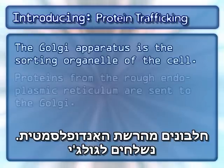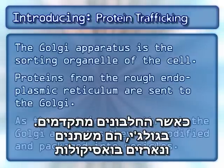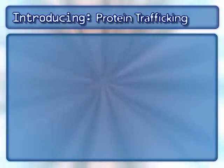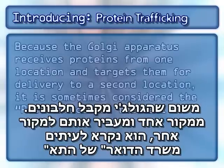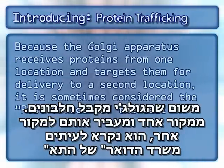Proteins from the rough endoplasmic reticulum are sent to the Golgi. As the proteins move through the Golgi apparatus, they are modified and packaged into vesicles. Because the Golgi apparatus receives proteins from one location and targets them for delivery to a second location, it is sometimes considered the post office of the cell.